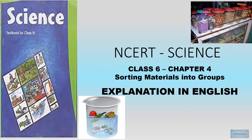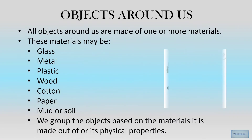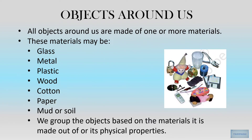NCERT Science Class 6, Chapter 4: Sorting of Material into Groups. Objects around us — we have to know what are the different objects around us, how they are made, and what materials are being used.